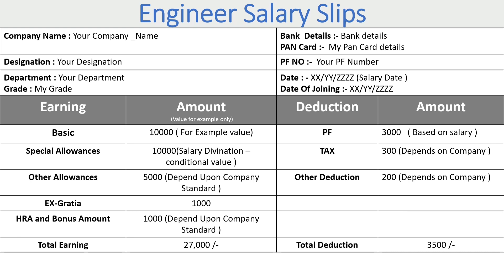HRA and bonuses also depend upon the company. This section explains total earnings. The second section explains total deductions — what is your PF deduction, what is your tax deduction, and other deductions, which are totally dependent upon the company. So the second section is totally defining the deductions.